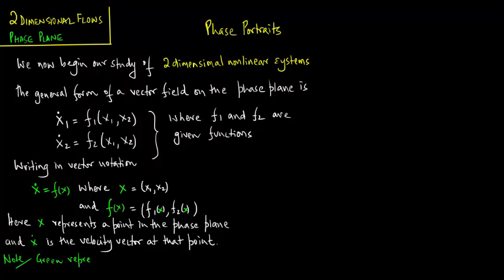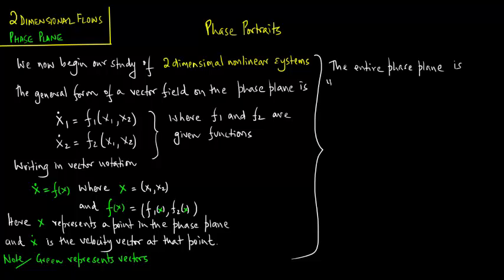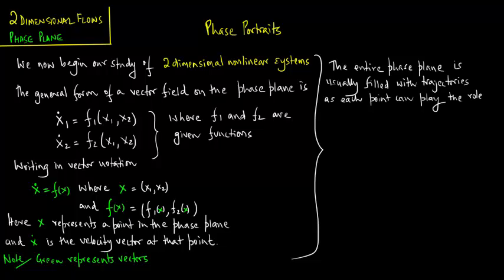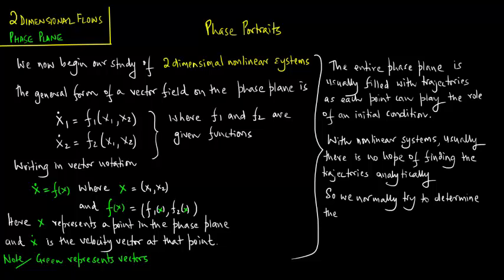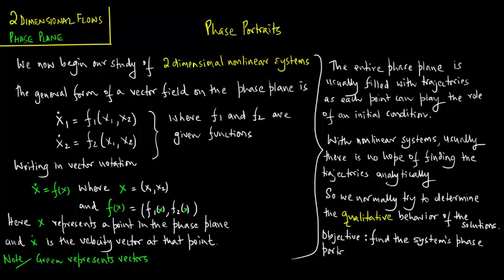Note: green represents vectors. The entire phase plane is usually filled with trajectories, as each point can play the role of an initial condition. With nonlinear systems there is no hope of finding the trajectories analytically, so we normally try to determine the qualitative behavior of the solutions. Our objective is to find the system's phase portrait directly from the properties of f(x).